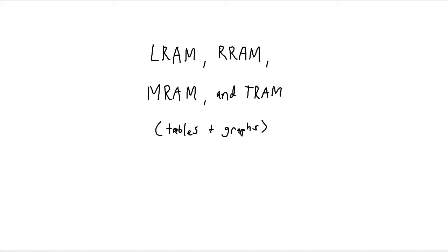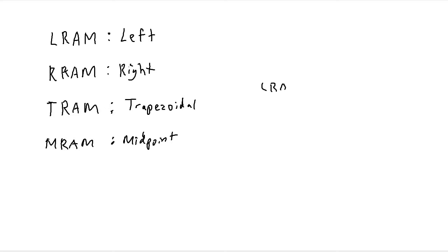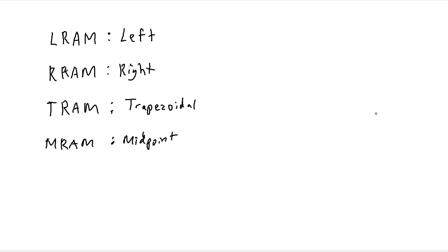Let's take a look at finding LRAM, RRAM, MRAM, and TRAM using tables and graphs. LRAM is your left Riemann sum, or left rectangular approximation method. RRAM is your right Riemann sum, or right rectangular approximation method. TRAM is your trapezoidal approximation method, and the easiest way to remember it is just by taking your LRAM, adding RRAM, and dividing by two — it's just the average between the two. MRAM is your midpoint RAM, and you usually use MRAM when looking at tables.